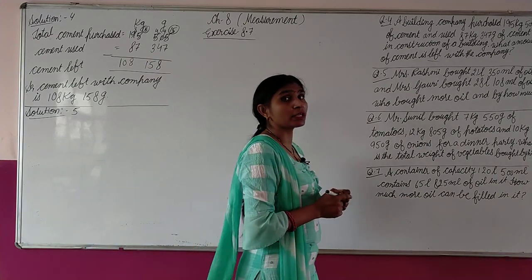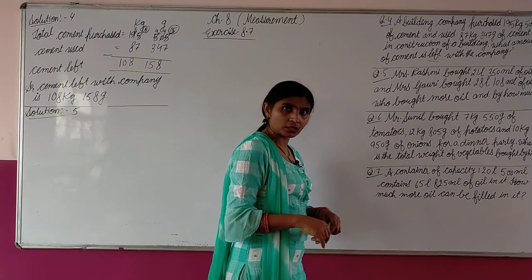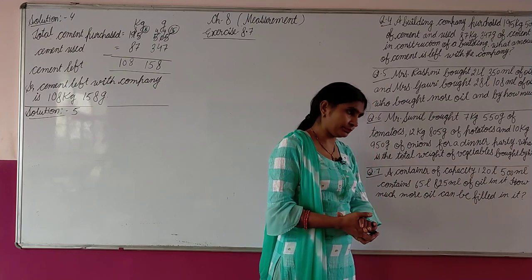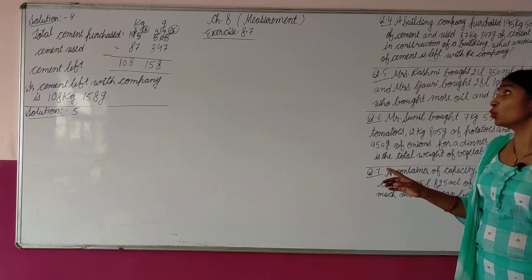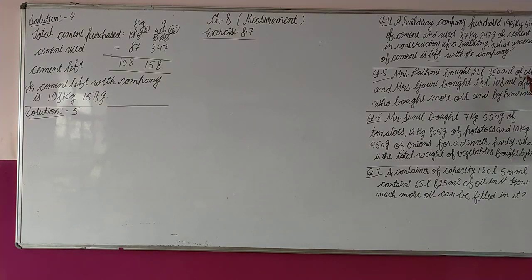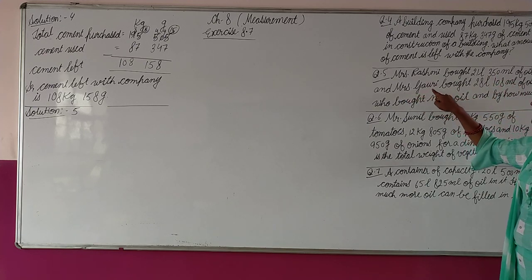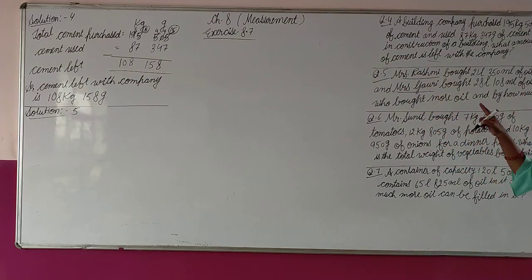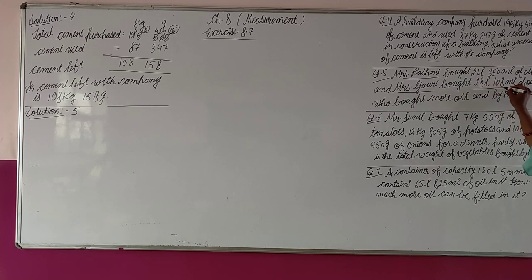Question five: Mrs. Rashmi bought 21 liter 350 milliliter of oil. Mrs. Gori also bought oil — 28 liter 108 milliliter. Both ladies purchased oil. Who bought more oil and by how much?